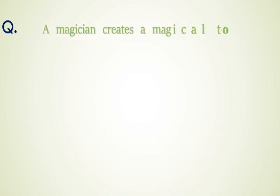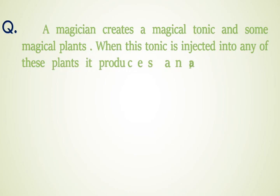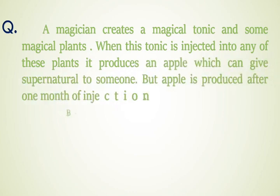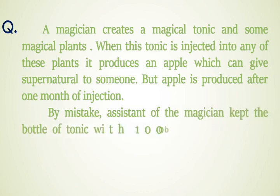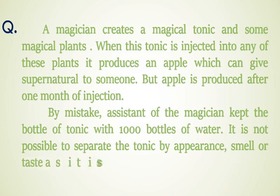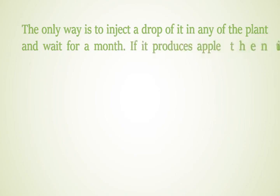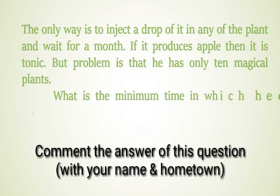Let's move to another question. A magician creates a magical tonic and some magical plants. When this tonic is injected into any of these plants, it produces an apple which can give supernatural powers, but the apple is produced after 1 month of injection. By mistake, the assistant kept the bottle of tonic among 1000 bottles of water. It is not possible to separate the tonic by appearance, smell or taste. The only way is to inject a drop into a plant and wait for a month — if it produces an apple, it is the tonic. But he has only 10 magical plants. What is the minimum time in which he can separate the tonic?